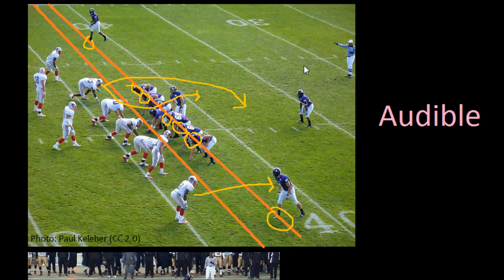There's one quarterback well known for this in the NFL named Peyton Manning. He's famous for watching all the tape of the defensive team during the week, and then he can recognize as soon as he gets out on the field what the defense is going to do. That allows him to audible to try to help his team gain more yards. He'll look around and if he sees something he recognizes, he'll call an audible — but obviously he can't just yell out what the new play is, because the defense would hear him. So he uses certain code words or signals that only the offense would know.